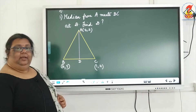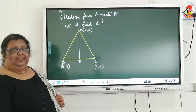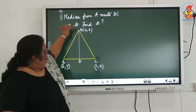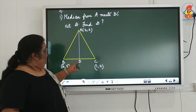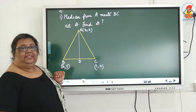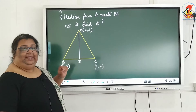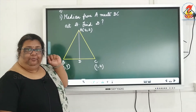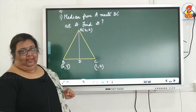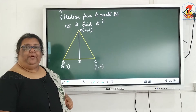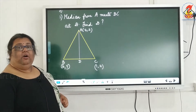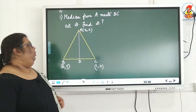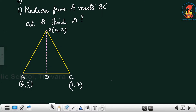What is meant by median? Median is a line drawn from one vertex to the midpoint of the opposite side. So D is the midpoint of BC. And how will you find the midpoint of any two coordinates? The formula is ordered pair: x1 plus x2 by 2, y1 plus y2 by 2.